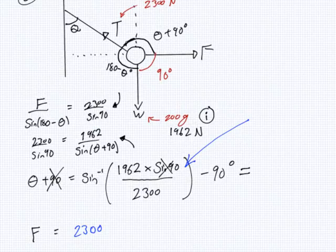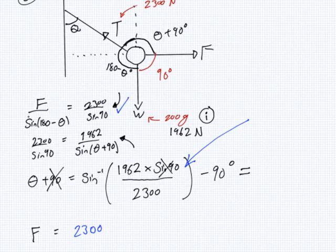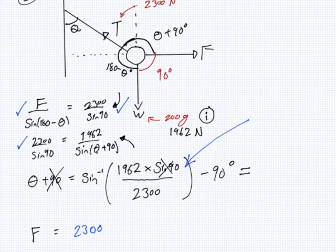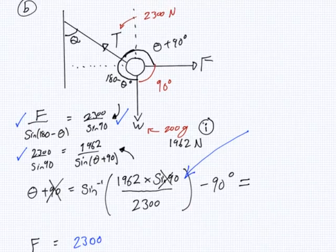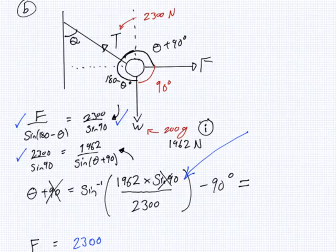2300 over sine 90? Correct. F over sine 180 minus theta? Correct. 1962 over sine theta plus 90. I don't know what's gone wrong. Can someone hand me up a calculator? I'm confused. Pass it along. It shouldn't be minus.